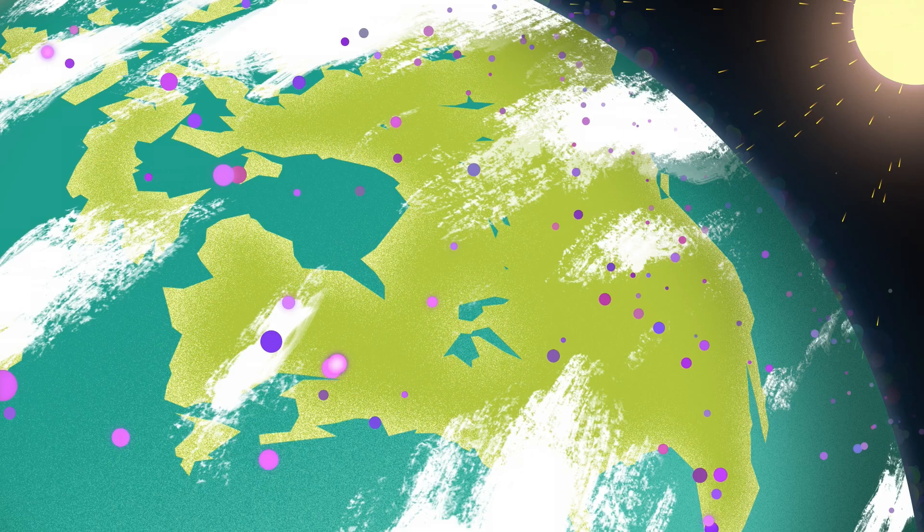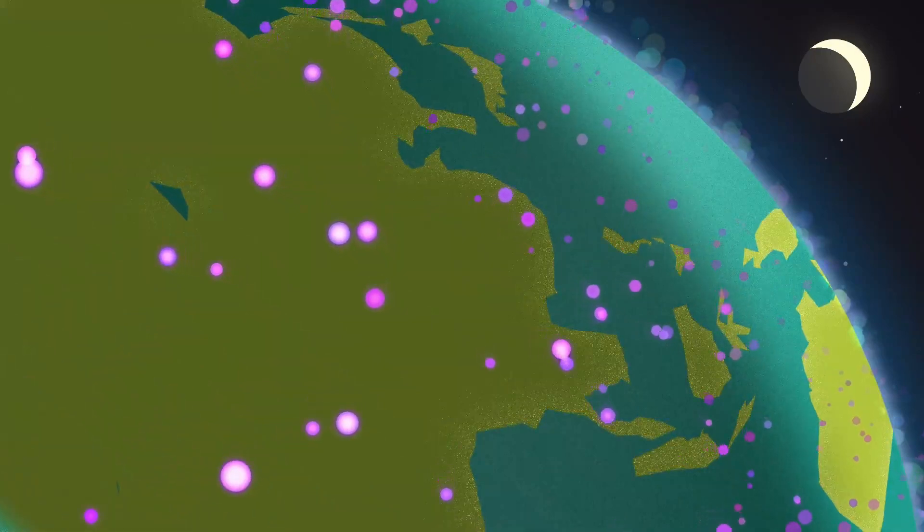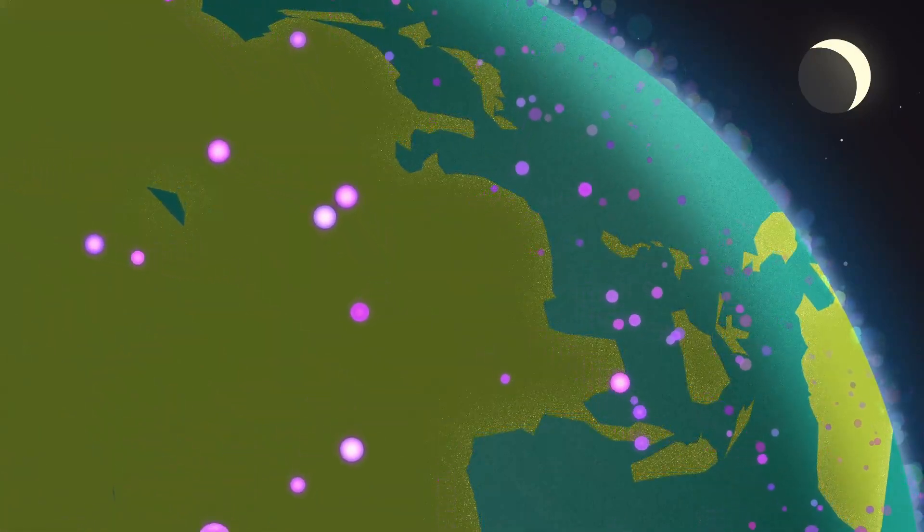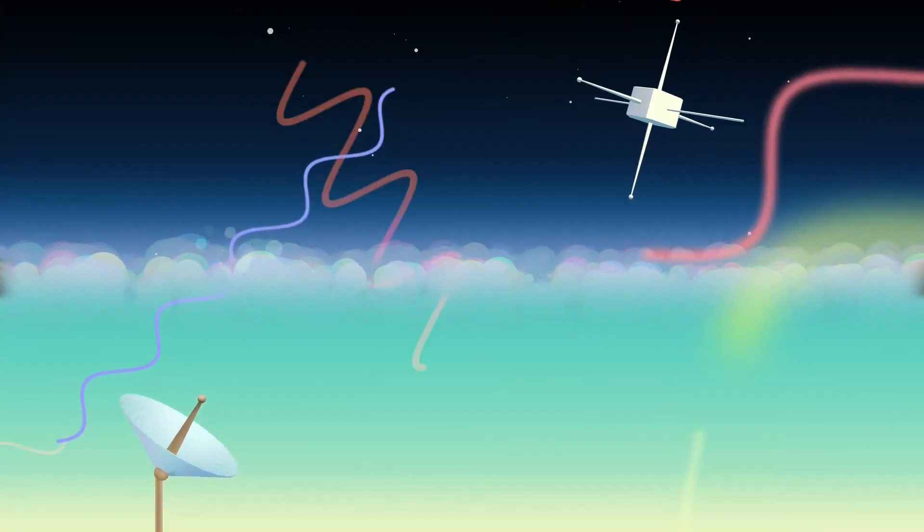When the moon blocks the sun during a solar eclipse, there is a noticeable impact on Earth's upper atmosphere, known as the ionosphere. These changes can affect radio communications, including amateur radio, also known as ham radio.